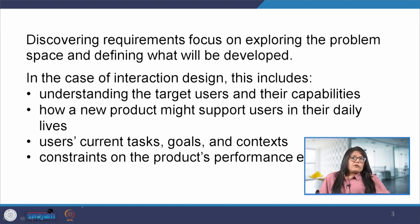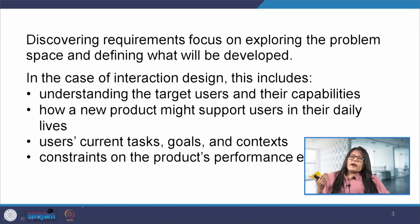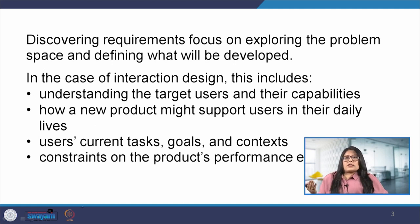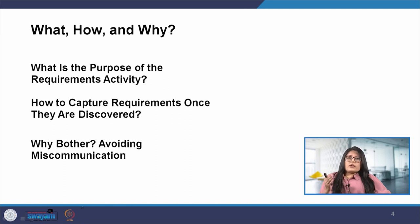One may feel that it will be difficult to distinguish between requirements, design and evaluation activities because they are so closely related. This confusion is especially true in an iterative development cycle like the one we use for interaction design. Requirements, design and evaluation are all intertwined, with some design taking place while requirements are being discovered and when the design is evolving through various steps. Because the development cycles are so iterative and short, one may confuse the purpose of the different activities.